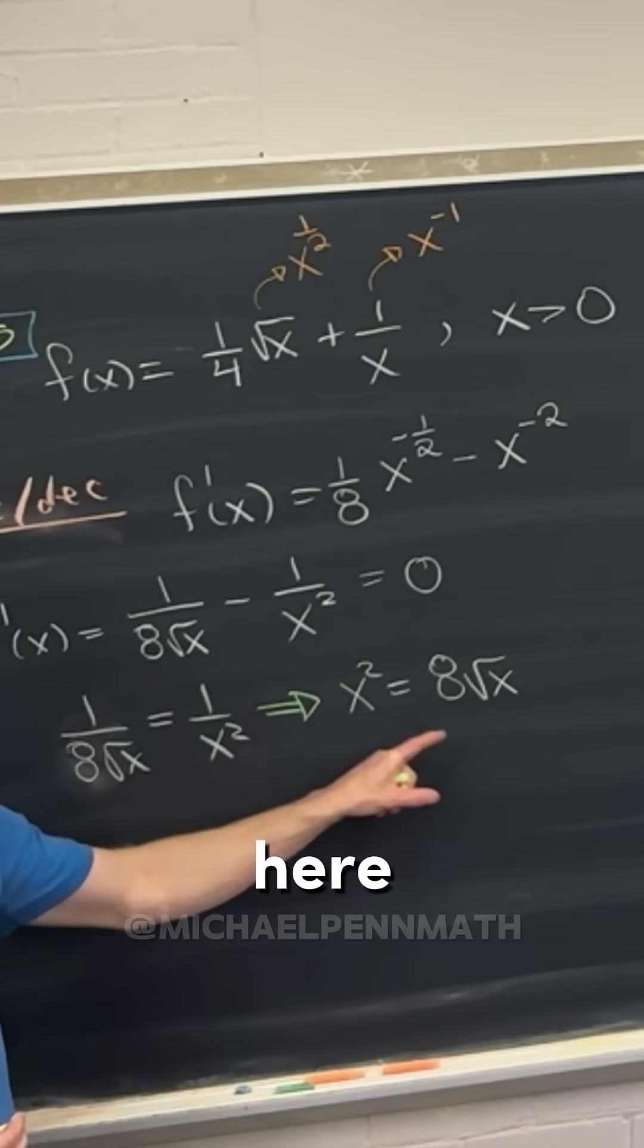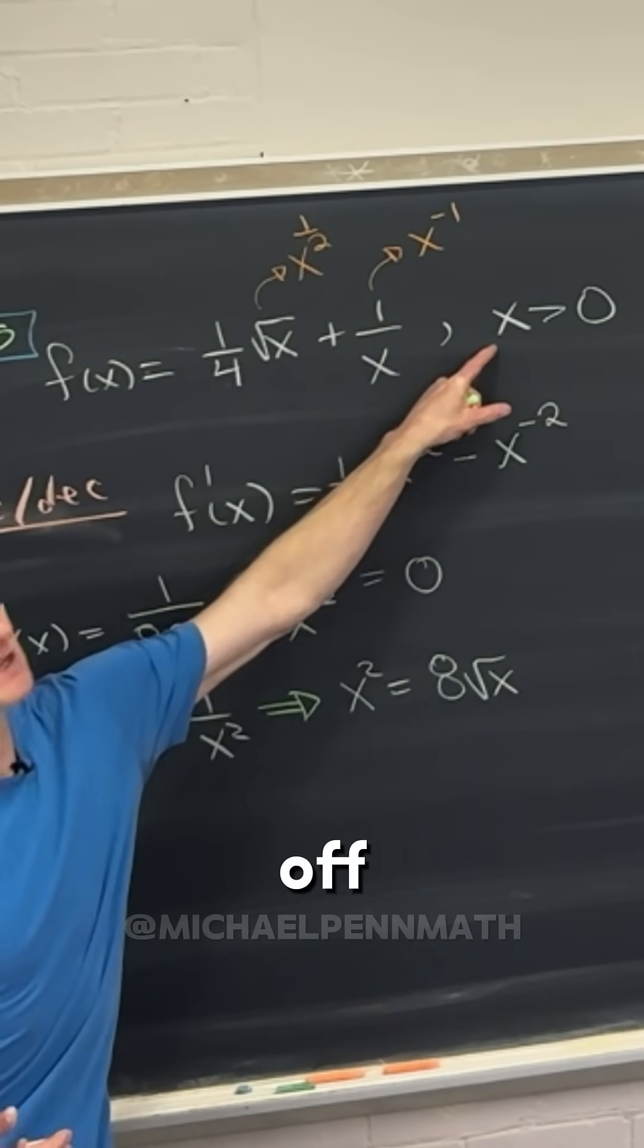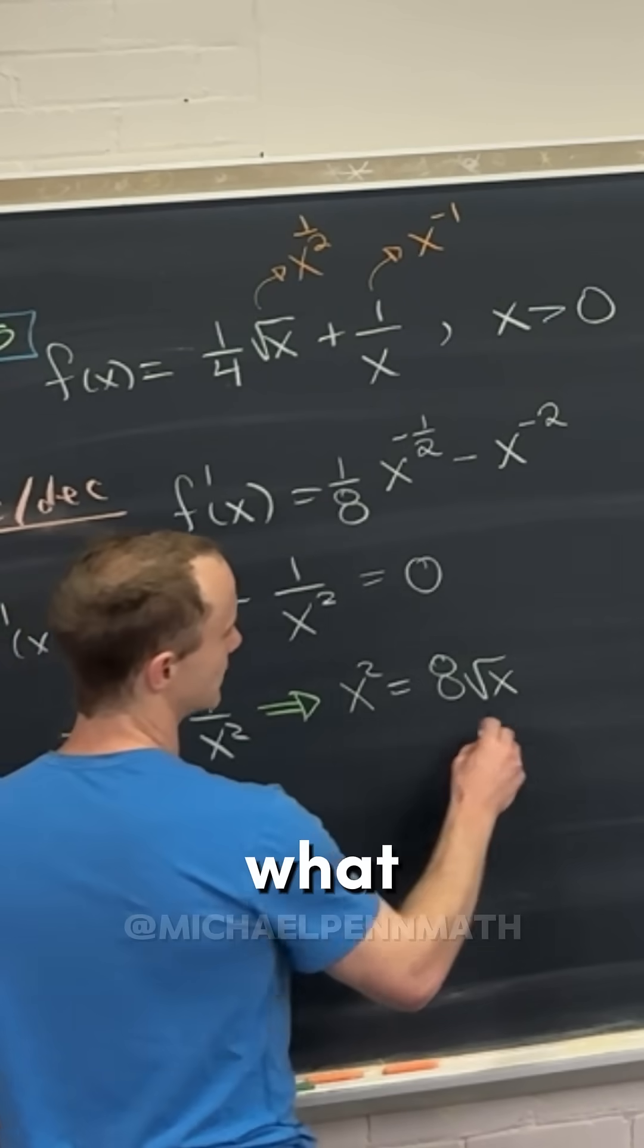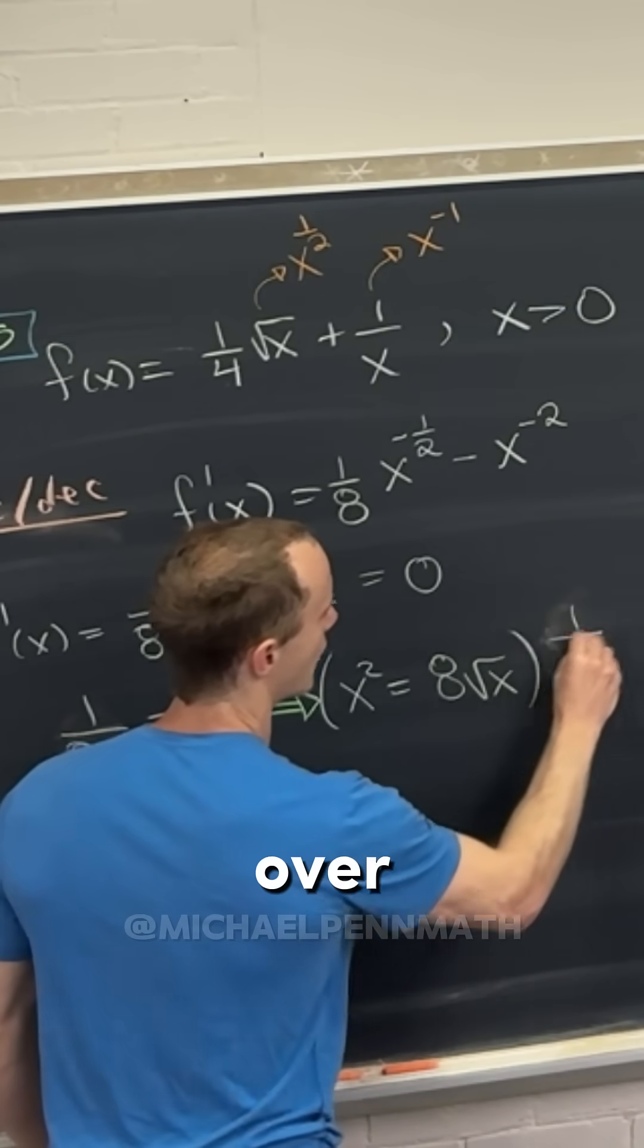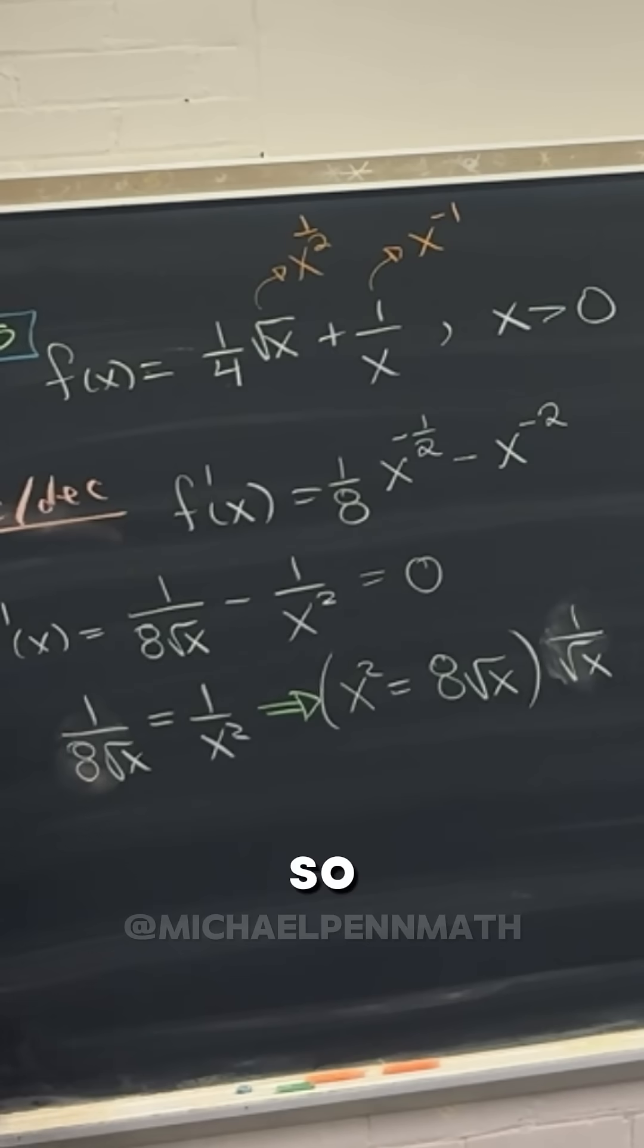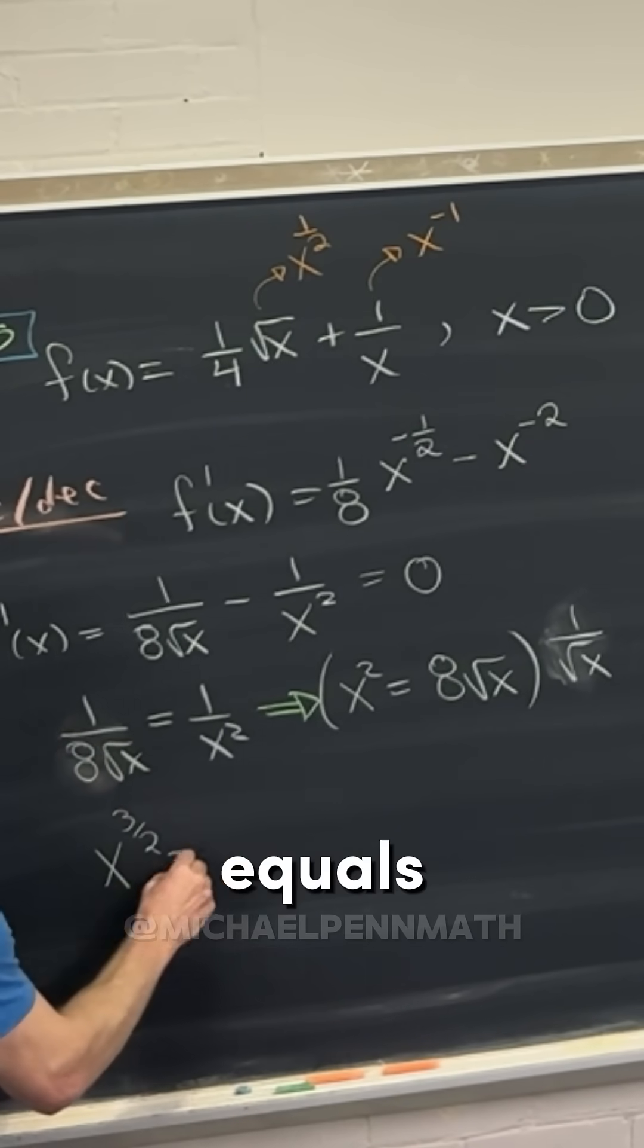But we're in good shape here, because look at this, this square root of x is never equal to zero based off of our thing right here, right? So that's what we'll do. We'll take this, and we'll multiply it by 1 over the square root of x. So that's going to give us an x to the 3 halves equals 8.